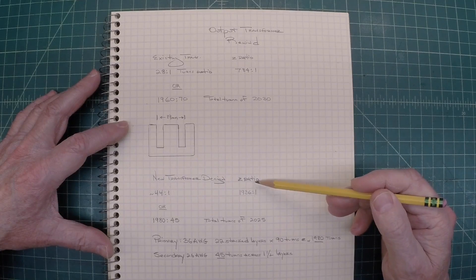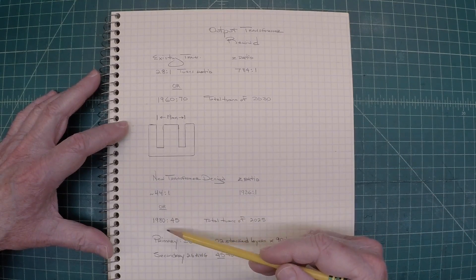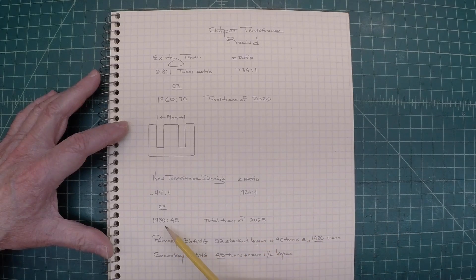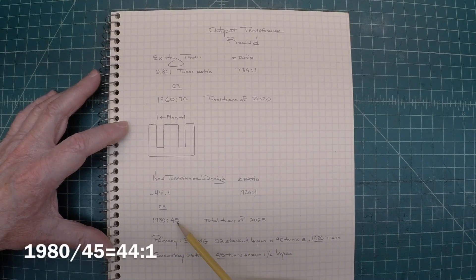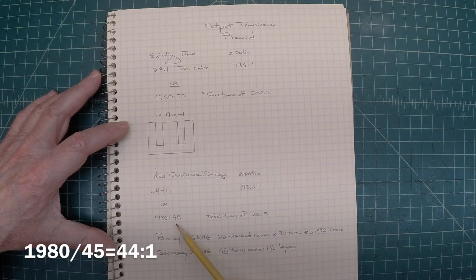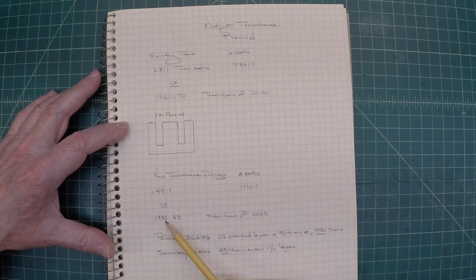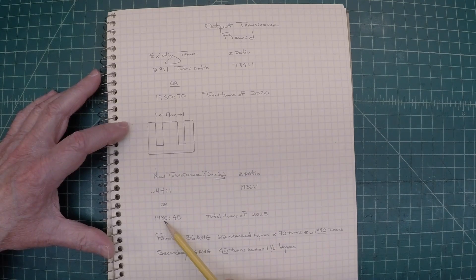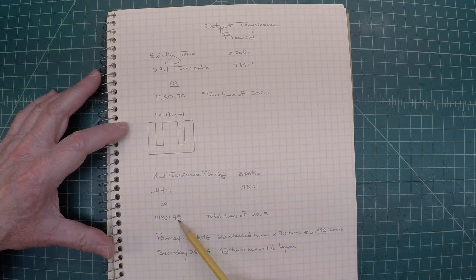That would give us an impedance ratio of 1936 to 1. And if you do the math, what I'm going to shoot for is 1980 over 45, which is the same thing as 44 to 1. I'll have 1980 windings on my primary side and 45 on the secondary side.